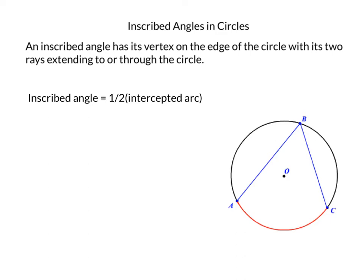Hi, welcome. This video is going to show you information and notation about inscribed angles and circles. We'll start with the definition, but I'll show you what I'm talking about in the picture below. An inscribed angle has its vertex on the edge of a circle with its two rays extending to or through the circle.